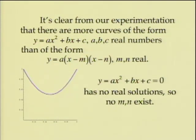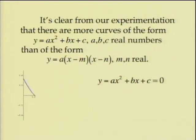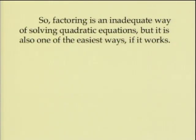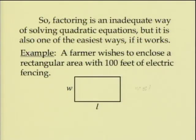Something like this doesn't cross the x-axis. I cannot find that m and n. Something like this does, I may be able to find m and n, but they may not be rational numbers, and it's going to be hard for me to factor it if they're not. So factoring is good, but it's inadequate for a lot of the solving that we will eventually need to do. But if it works, it's the easiest way to do it.